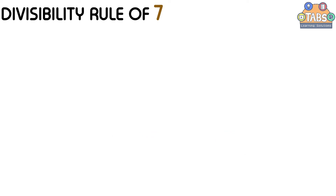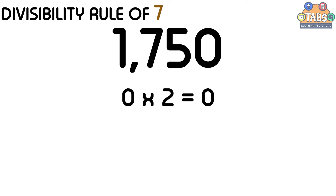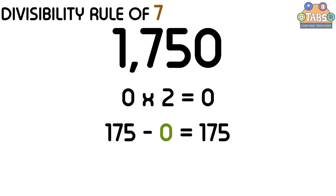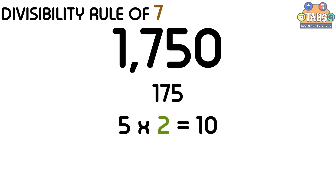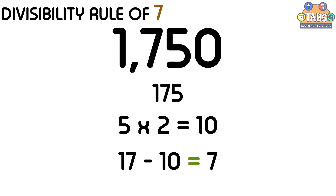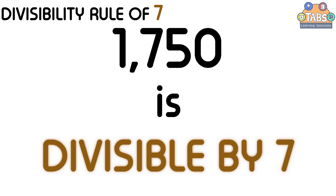Now let us try this example: 1750. The last digit of 1750 is 0. Twice 0 is equal to 0, and 175 minus 0 is equal to 175. Here, we can repeat the two steps to 175 until it becomes a smaller number. The first step is we need to double the last digit, which is 5. 5 times 2 is equal to 10. Then we subtract 10 from the remaining digits, which is 17. 17 minus 10 is equal to 7. And 7 is a multiple of 7. Therefore, 1750 is divisible by 7.